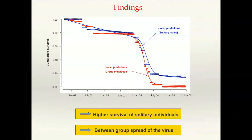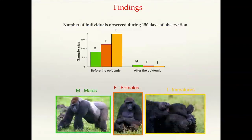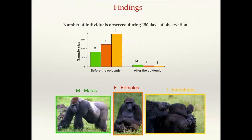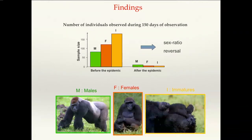Another finding: since adult females live in groups while many adult males live solitary, we expected more males to survive the outbreak — and that's what we observed. Before the outbreak there were more females than males, which is typical for great apes and even humans. But after the outbreak, the sex ratio reversed: we had more males than females, because females were completely wiped out due to their social, gregarious behavior.